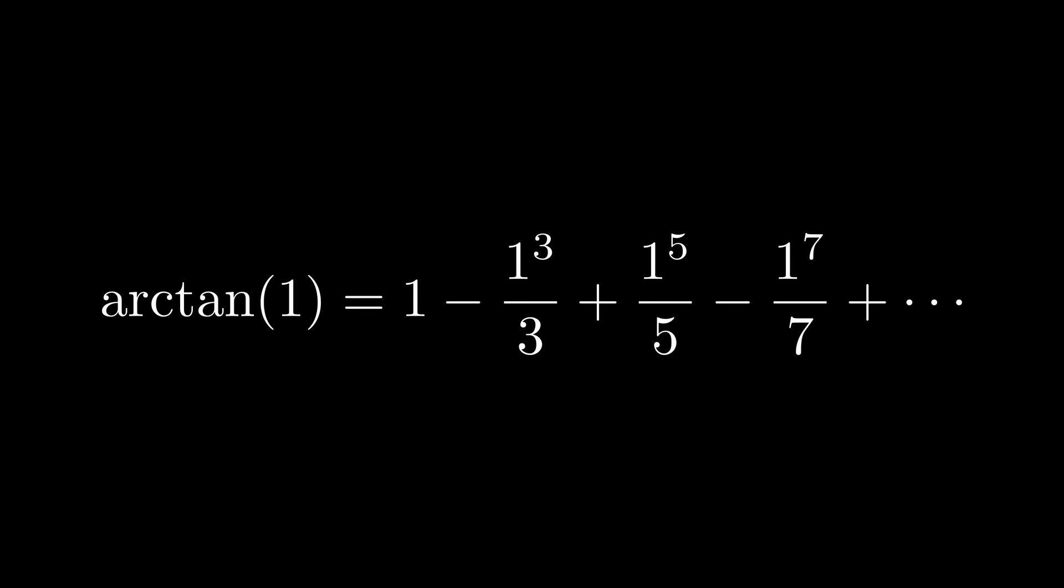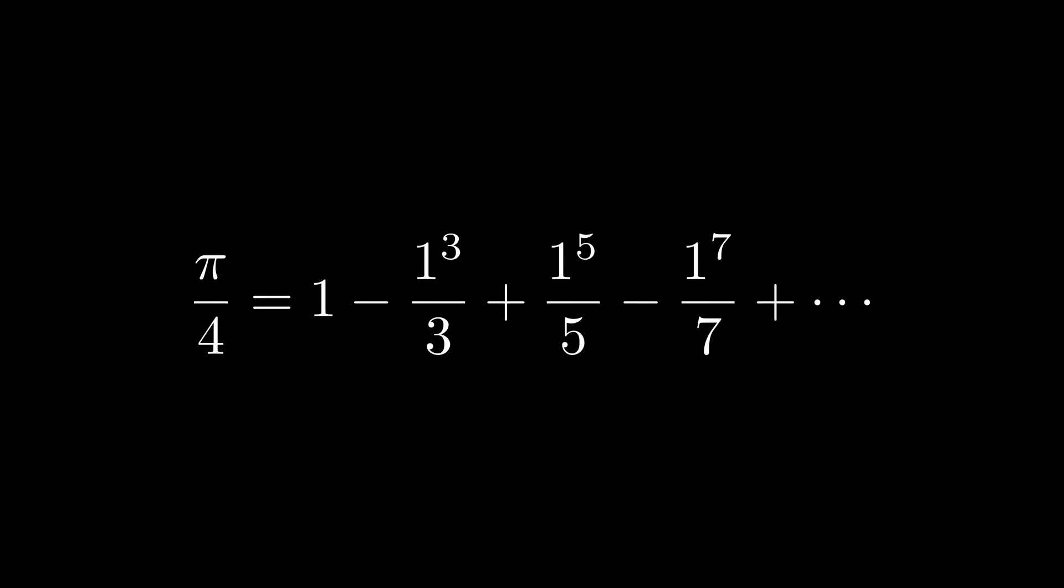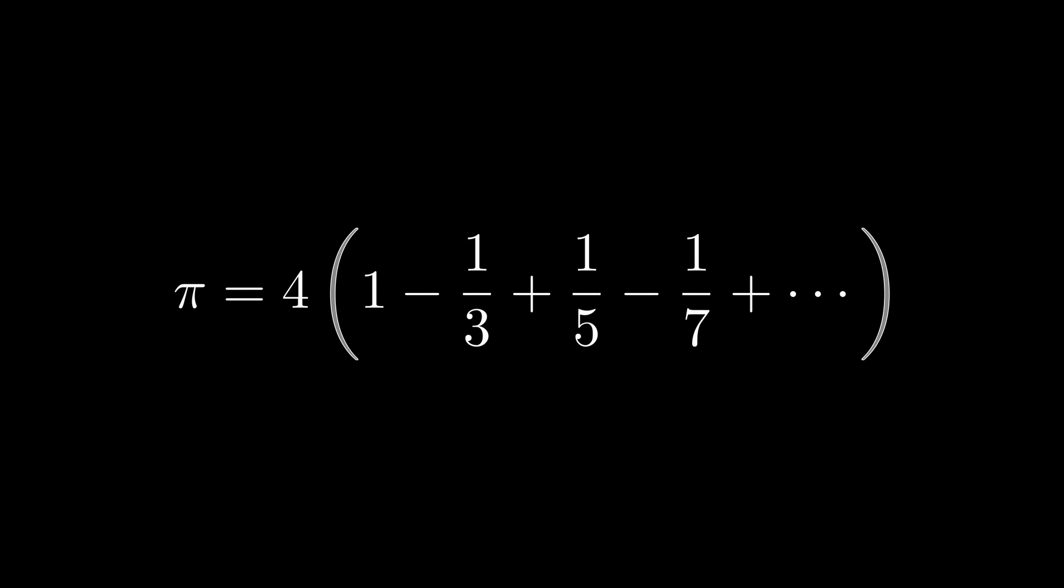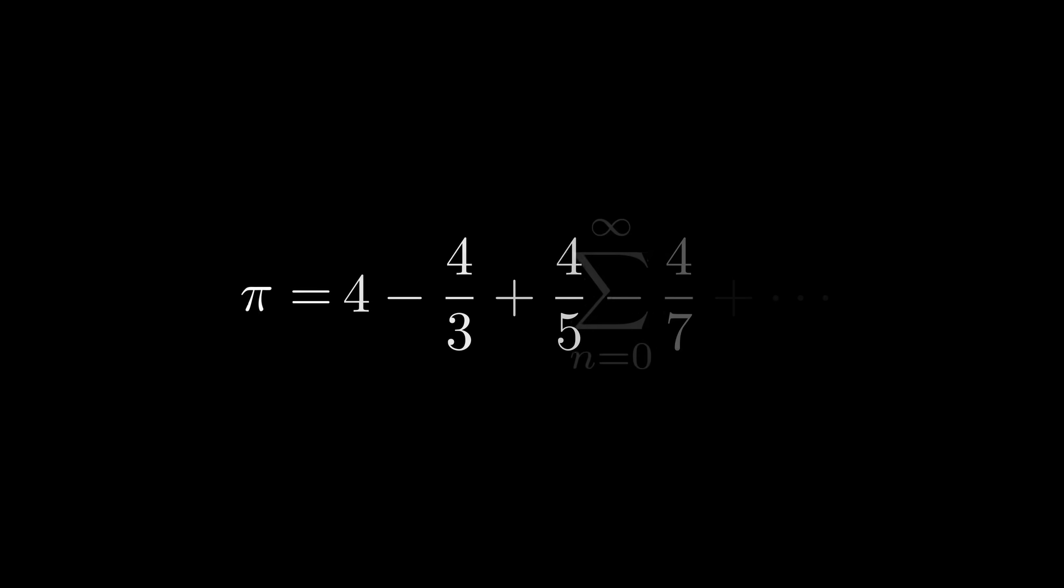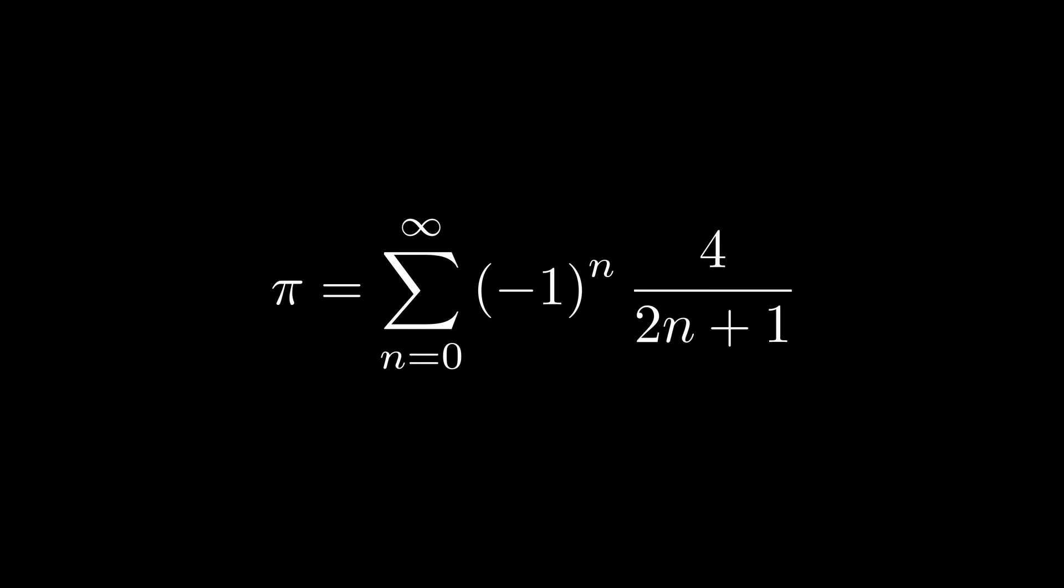And when we put in one, remember arc tan of one is pi over four, we get this sum of fractions, which is alternating. And all we have to do now is multiply both sides by four. And we have pi as this alternating sum of fractions, which is just this new summation that you'll see on the screen right now.